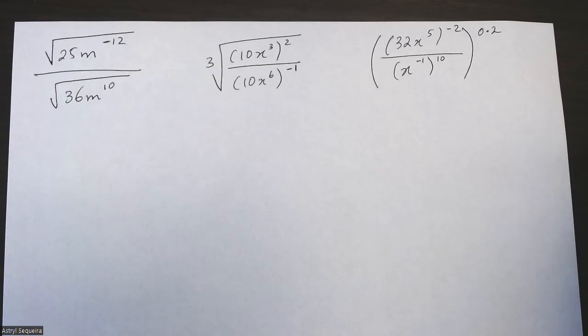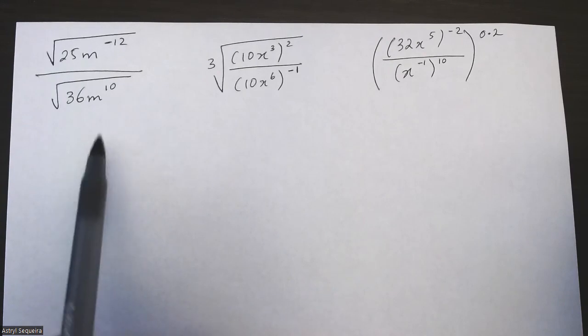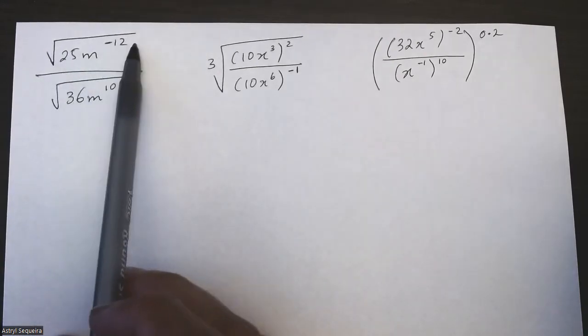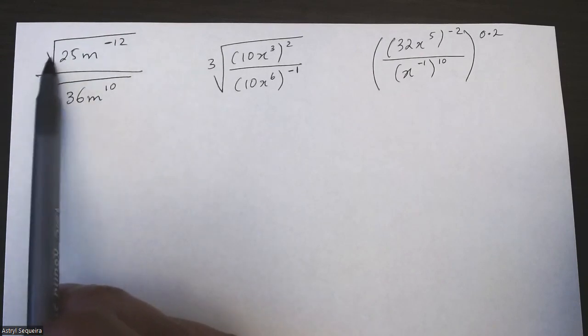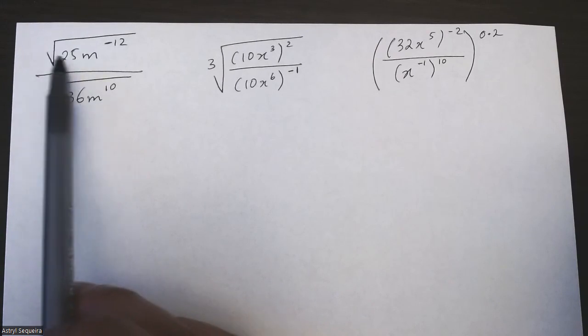All right, so in this video we are going to simplify these exponential expressions. Let's start the first one. I have a square root of 25m to the negative 12, so I'm going to distribute the square root to both terms. For the constant, you just want to square root the constant, so the square root of 25 is just 5.